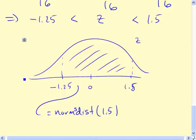And then we want to subtract off everything to the left of minus 1.25. So normsdist of negative 1.25.